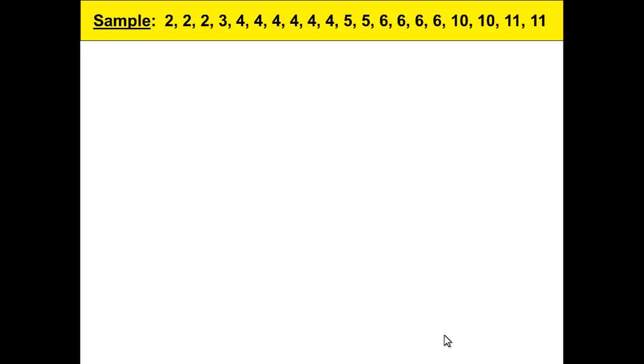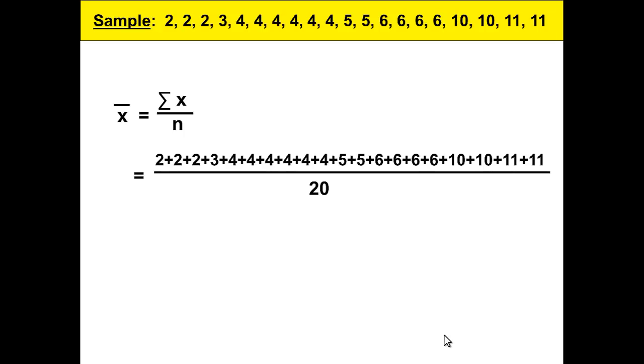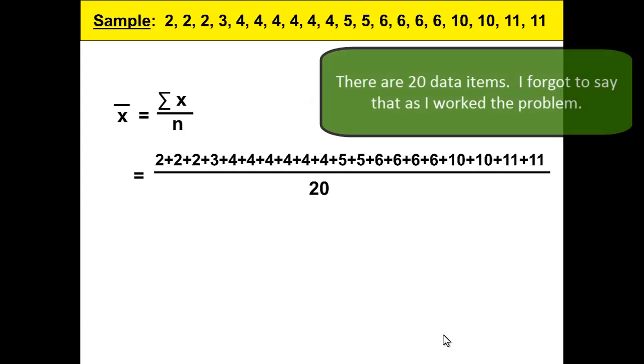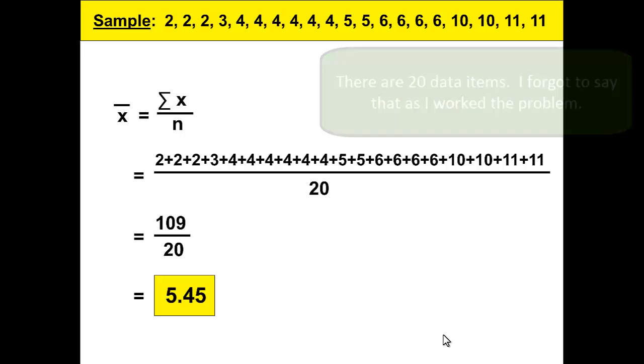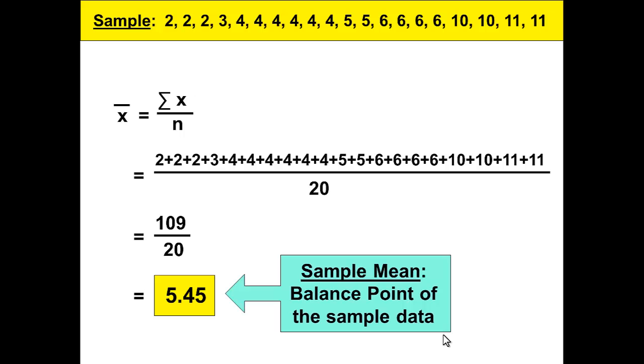The formula is x bar equals the sum of the x's divided by n the sample size. So add up all the x's, all the data, and no I'm not going to read all the data out, but you'll add all those up and divide by 20. When you add those up, you get 109 divided by 20 gives us 5.45. That's the sample mean, the balance point of the sample data.